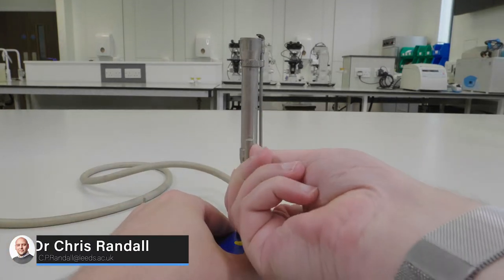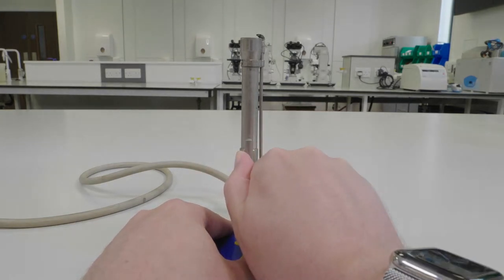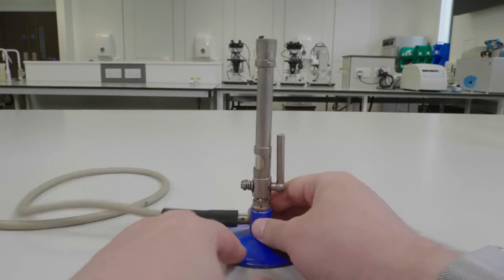The first thing when getting the Bunsen burner out of the boxes at the end of your bench is to check that the pilot light valve is in the vertical position like I'm showing you in the video now.